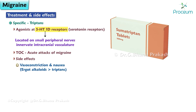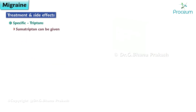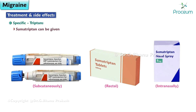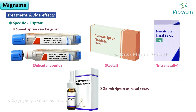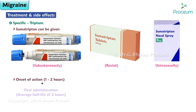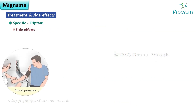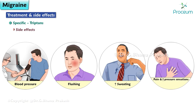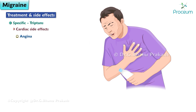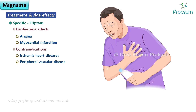Triptans have good oral absorption; sumatriptan can also be given subcutaneously, rectally, and intranasally, and zolmitriptan as a nasal spray. Onset of action is about 1 to 2 hours following oral administration with an average half-life of 2 hours. Headache may recur within 24 to 48 hours, so a second dose is sometimes preferred. Side effects include rise in blood pressure, flushing, sweating, and pain or pressure sensations in the chest, neck, throat, and jaw. Cardiac side effects like angina and myocardial infarction are increased; hence triptans should be avoided in ischemic heart disease and peripheral vascular disease.